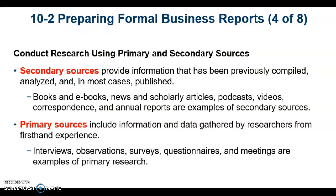Once you have your work plan, it's time to conduct research using primary and secondary sources. Secondary research is the use of data that already exists from others that have been published, experienced, or observed — this could be books, e-books, videos, and annual reports. Primary sources is information and data that authors gather themselves from first-hand experience, such as interviews, observations, surveys, questionnaires, and meetings. Research methods are discussed later in the section titled 'Collecting Information Through Primary and Secondary Research.'